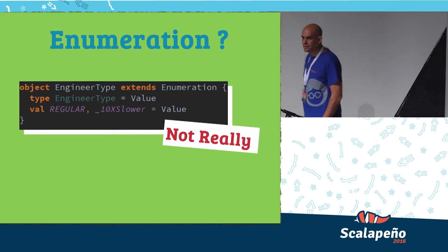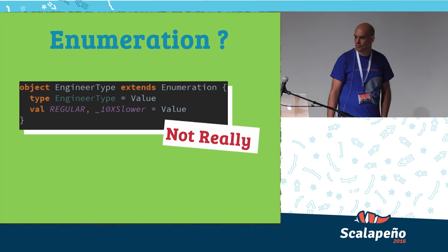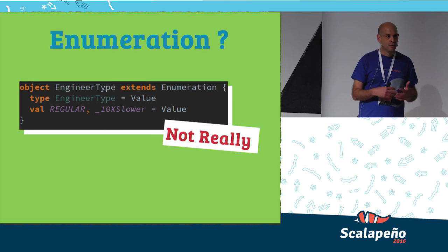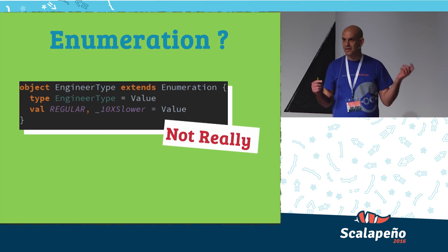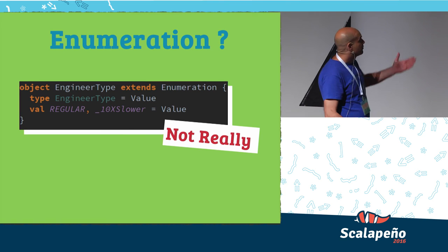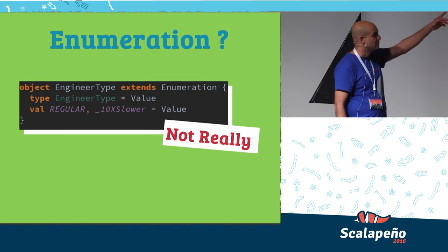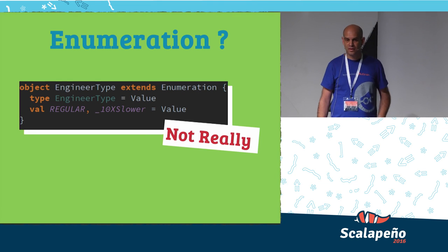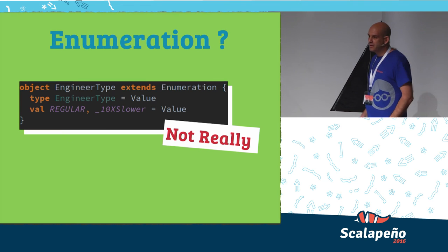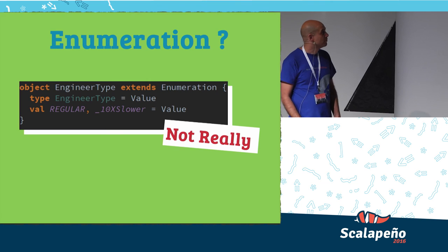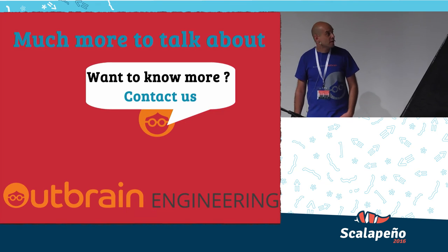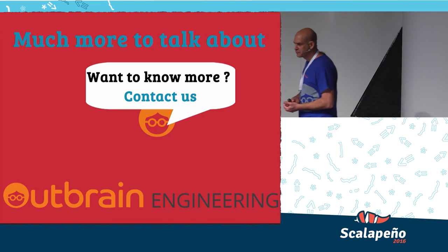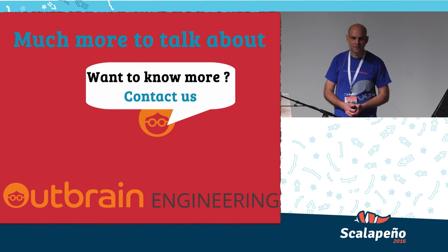There are things that are not perfect in Scala — enumeration is one of them. Enumerations are useful in APIs when you have many types or subtypes. For example, if you have two types of engineers — regular and 10x — you need an enum. But it's not that elegant, at least compared to Java where enumeration works a bit better. There's a lot more to talk about with Scala and public APIs, but I'm almost out of time. If you have more questions, you can ask me later. Thank you very much.